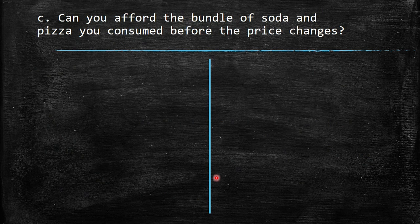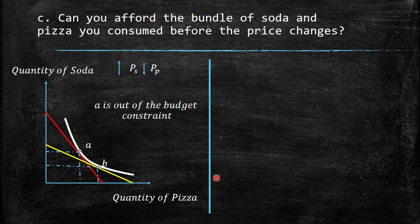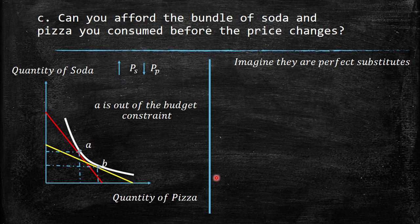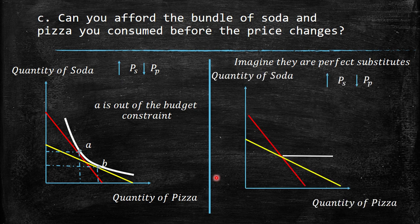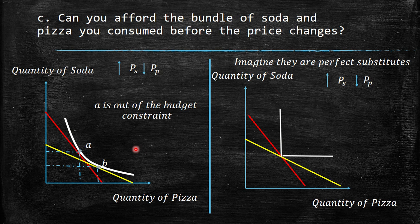Can you afford the bundle of soda and pizza you consumed before the price changes? As we represented, it should not be possible — you were at point A and now at point B, and A is outside the new budget constraint. However, imagine they are perfect substitutes — which doesn't make too much sense — but in that case we might achieve the same bundle. As normally represented with normal goods, they are not perfect substitutes or complements, so you cannot consume the same bundle as before.